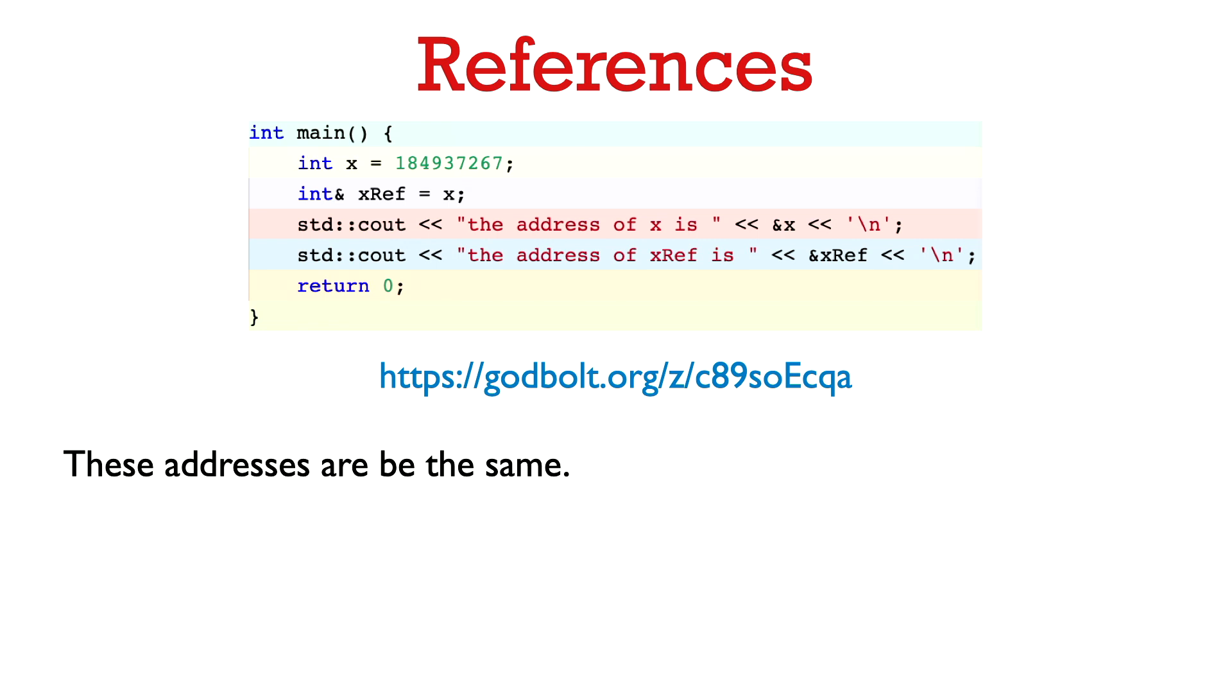So a reference to a variable and the variable are really indistinguishable. So they even have the same address. So if we print out the address of x here and the address of xref, these are going to be the same.